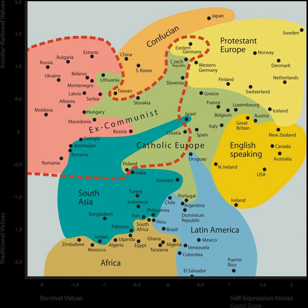According to the authors, these two dimensions explain more than 70% of the cross-national variance in a factor analysis of ten indicators, and each of these dimensions is strongly correlated with scores of other important orientations. The authors stress that socioeconomic status is not the sole factor determining a country's location, as religious and cultural historical heritage is also an important factor.